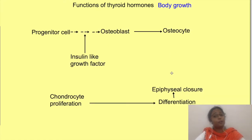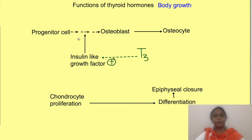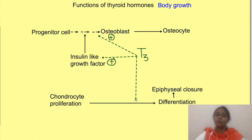Thyroid hormones are also essential for normal body growth, because they are required for normal production and action of growth hormone and insulin-like growth factor 1. They also have a direct effect on bone growth and promote closure of the epiphysis.